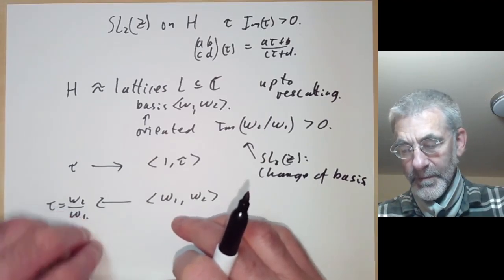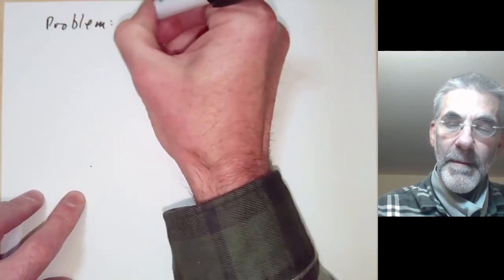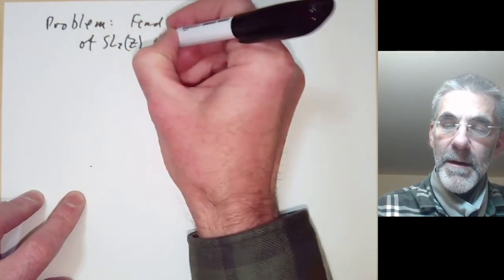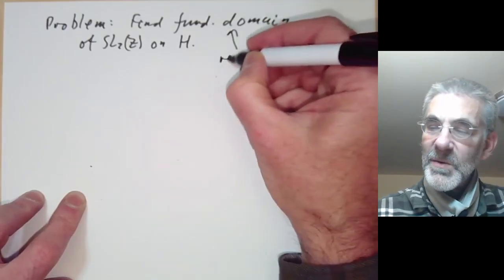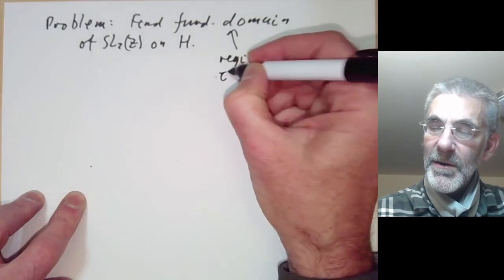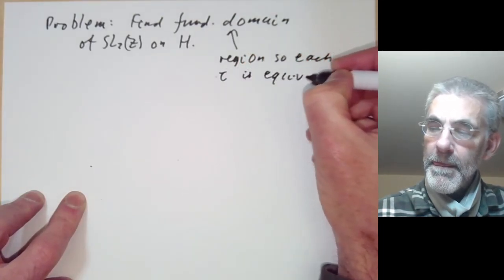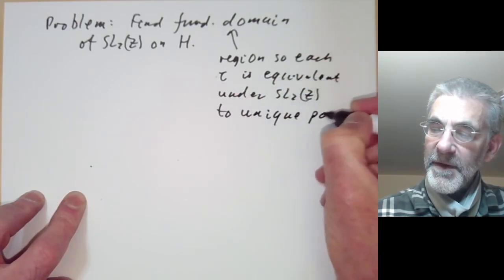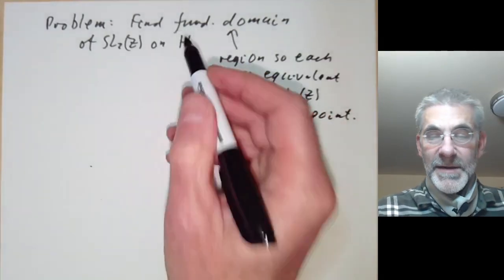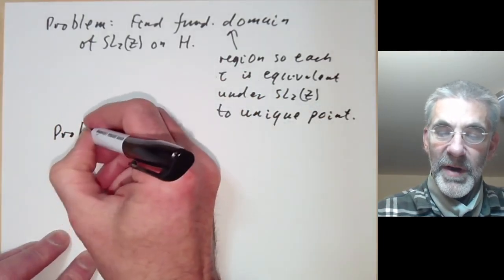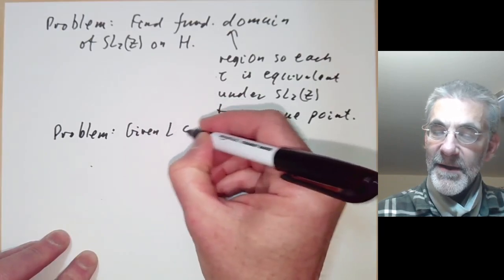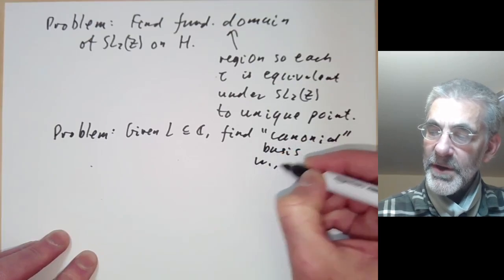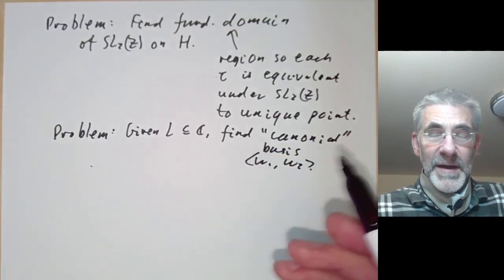Okay and now I can explain the problem we want to solve this lecture. The problem is to find a fundamental domain of SL2Z on the upper half plane H. So what does a fundamental domain mean? Well this means a region so each tau is equivalent under SL2Z to a unique point of the fundamental domain. Well it turns out to be easier to think of this in terms of lattices. So the problem: given a lattice L in C, find a canonical basis omega-1, omega-2 for it.